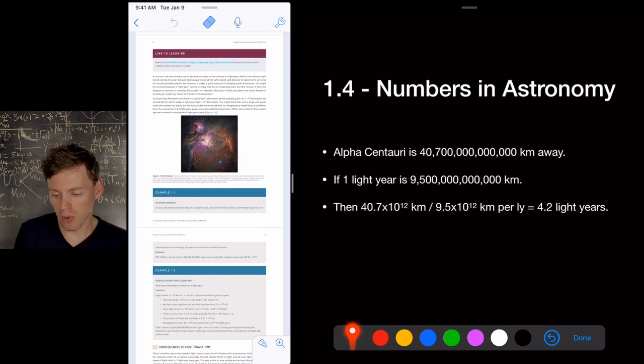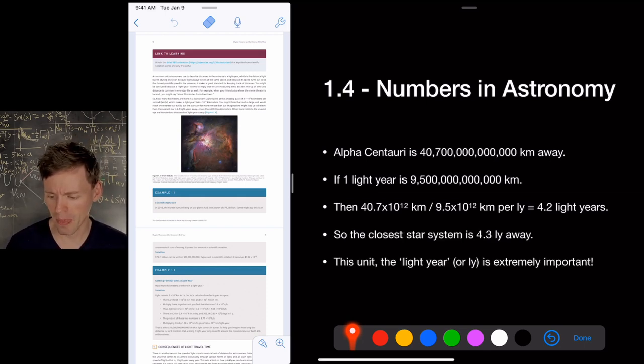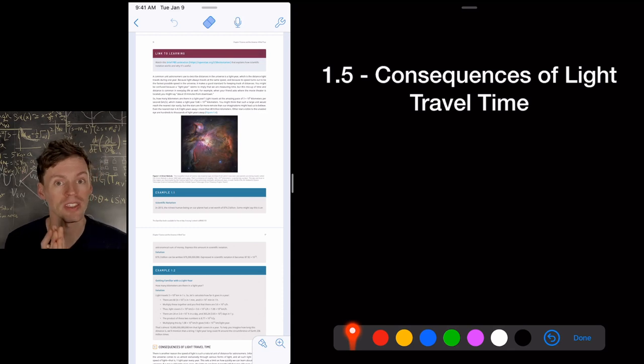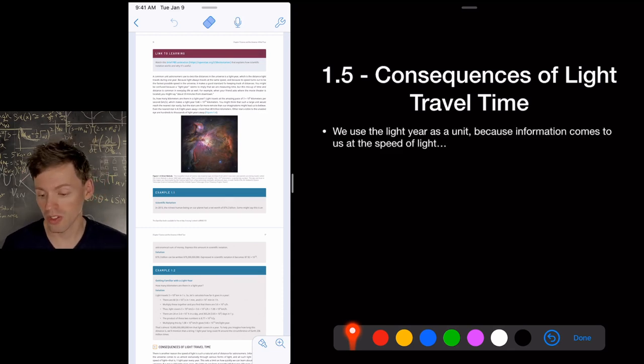If you take 40.7 and you divide it by 9.5 because the 10 to the 12th would go away for both of them. It's the same. 40.7 divided by 9.5 gives you 4.2. So that means 9.5 trillion kilometers. After one year, you travel 9.5 trillion kilometers. After the next year, another 9.5, another 9.5. You could do that four times and that would get you to the closest star system. So it takes 4.2 years for light to travel to the nearest star to us. Okay, that's a long time. It's about 4.3 light years. So this unit, the light year, abbreviated LY, extremely important unit. You have to make sure you understand that. There's some consequences to this.